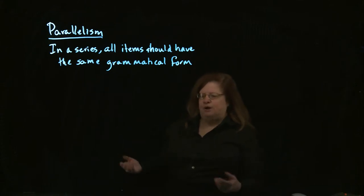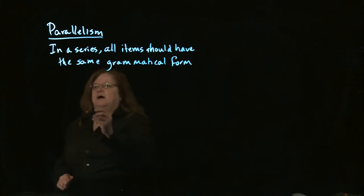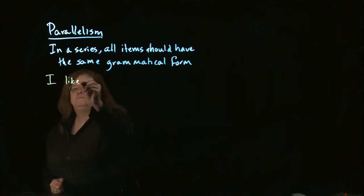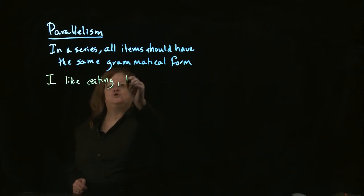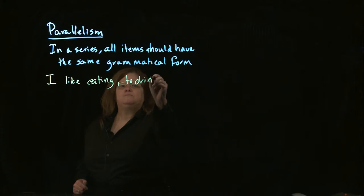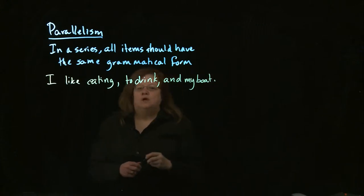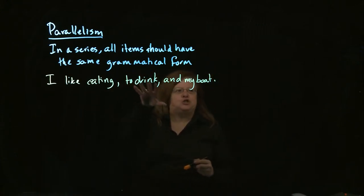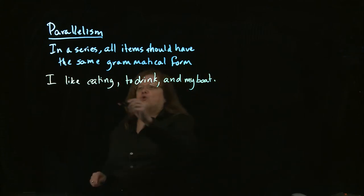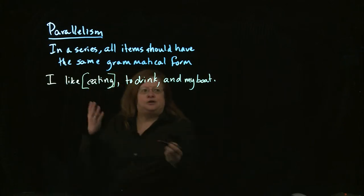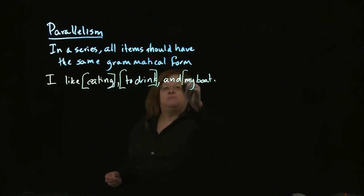Sometimes it is a matter of grammar. So for example, I might have something like, I like eating, to drink, and my boat. In this case, if we take each of these three elements in the series, they will actually each work separately. I can say I like eating, I can say I like to drink, and I can say I like my boat.